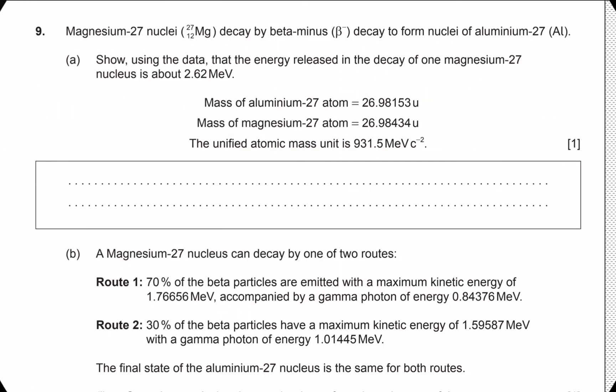Welcome to this new video. This is question 9, the last question in the May 2023 Time Zone 2 Paper 2. We are given that a magnesium nucleus decays into a nucleus of aluminium-27 by beta minus decay. In the first part, we need to show using the data that the energy released in the decay of magnesium-27 is about 2.62 mega electron volts.